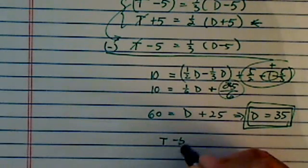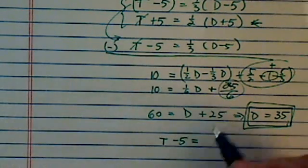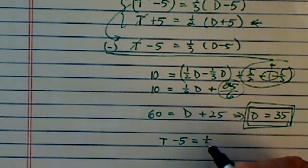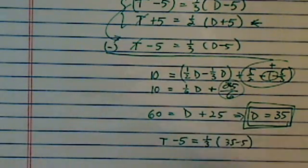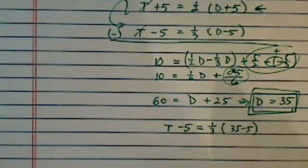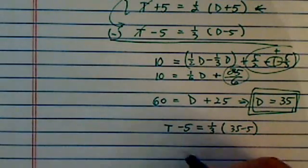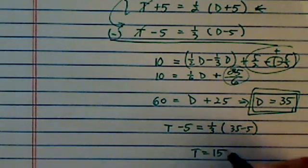If D is equal to 35, it's substituting back in there. You can see T minus 5. It doesn't matter which one you substitute. So now you pick one. So T minus 5 is equal to one-third. 35 minus 5, that's 30. Divided by 3, that's 10. So T is equal to 15 years old.